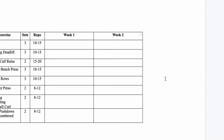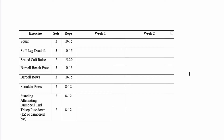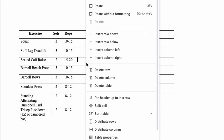When you do that, that column disappears. If you would like to delete a row, do that same thing. Let's suppose that I don't want to do a seated calf raise — you right click on any cell in that row that you would like to delete and then select delete row.